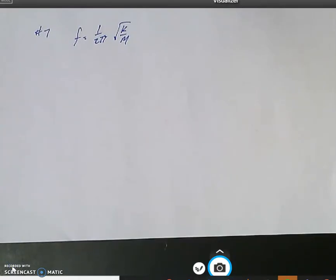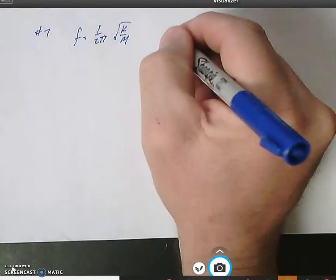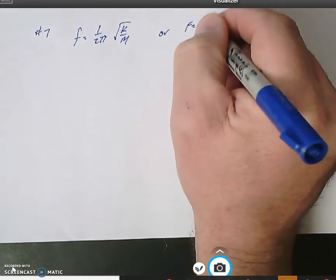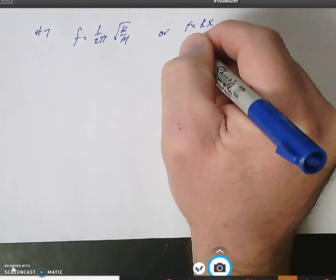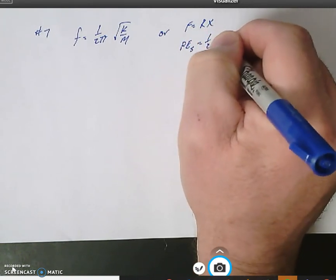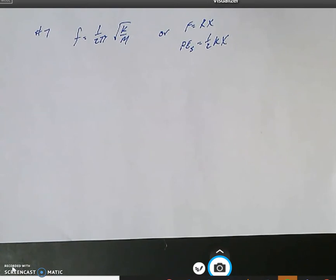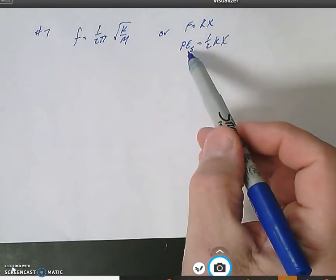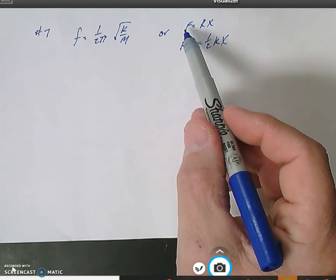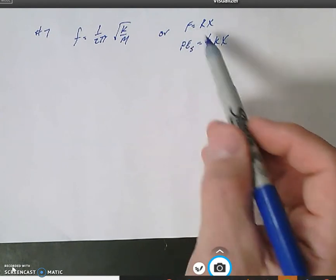In question number seven, we can use our frequency equation to figure out the elastic constant, so that gives us another tool. Because look at where else does k appear? It appears in f equals k times x, it also appears in our elastic spring energy equation. But we don't know the energy and we don't know the force for question number seven, and quite frankly we don't know the x value either.